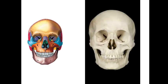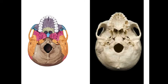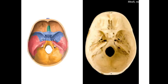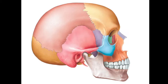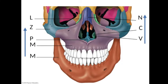The lateral, the frontal, the inferior view, as well as the inside view of the skull are all going to be necessary to recognize. Here's a mnemonic to help you remember the cranial bones: occipital, parietal, frontal, temporal, ethmoid, and sphenoid.